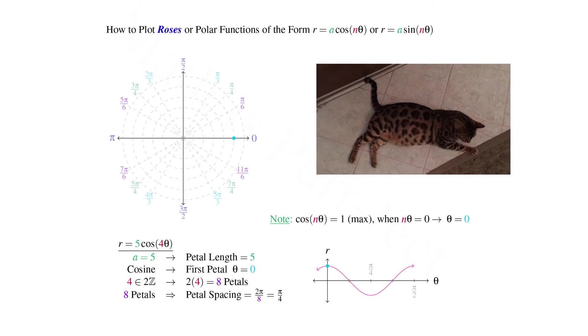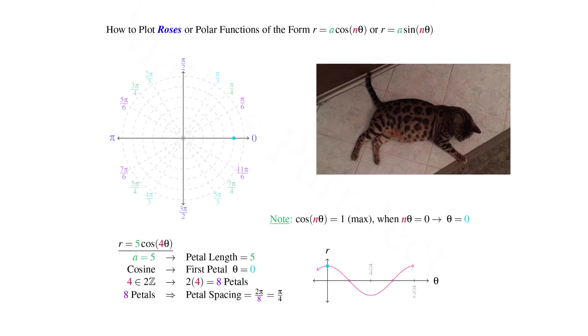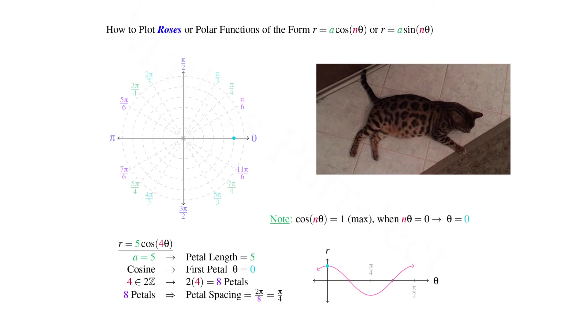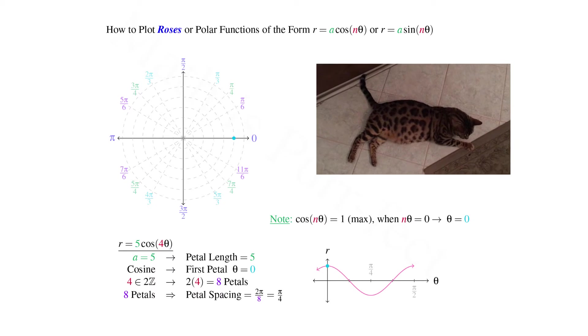We can see that cosine is maximized at 0, the location of our first petal. Let's indicate this in blue on our polar graph at a radius of r = 5.